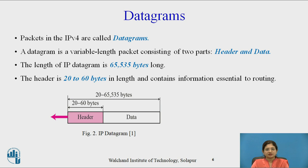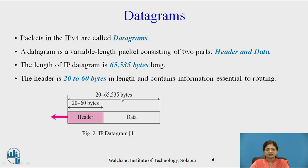Let's see the datagram in IP. Packets in IPv4 are called datagrams. A datagram is a variable length packet consisting of two parts: header and data. The length of the IP datagram is 65,535 bytes. The header is 20 to 60 bytes in length and contains information essential to routing. This diagram shows the total length of an IP datagram — 65,535 bytes — of which 20 to 60 bytes are reserved for the header.